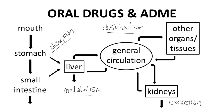Other organs can excrete drugs, but the kidneys are the main site of excretion. Both metabolism and excretion reduce plasma concentration and are processes for the elimination of a drug.